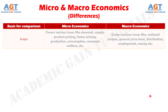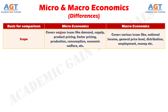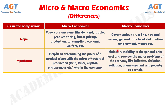Number 7: microeconomics covers various issues like demand, supply, product pricing, factor pricing, production, consumption, economic welfare, etc., whereas macroeconomics covers various issues like national income, general price level, distribution, employment, money, etc.